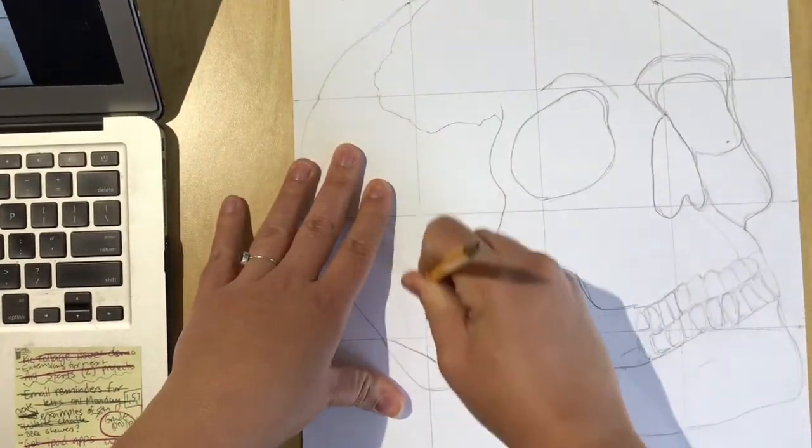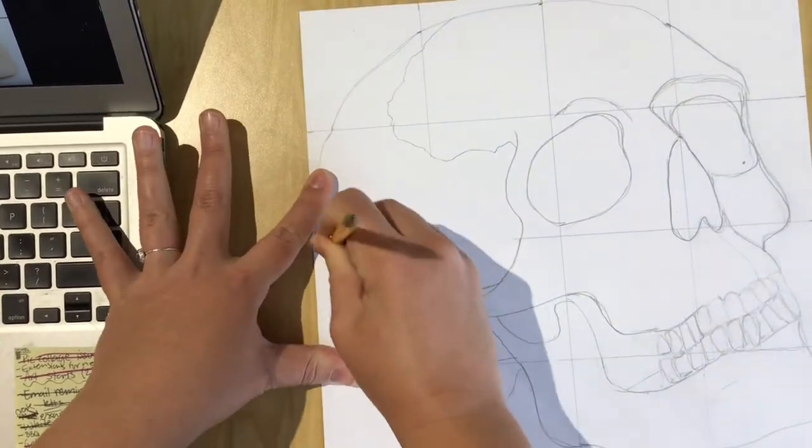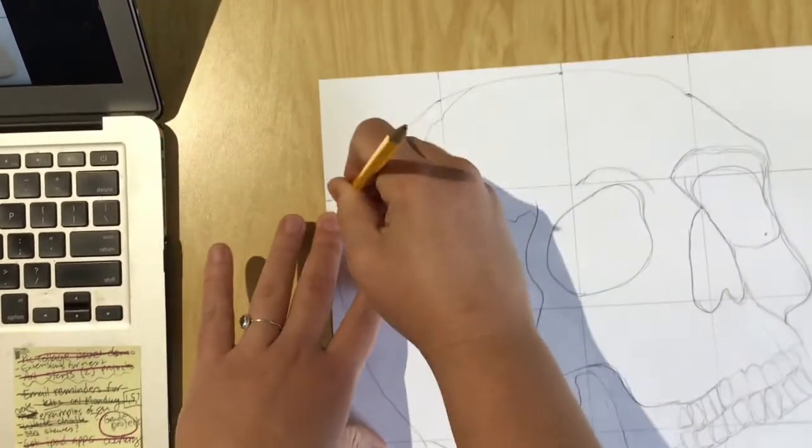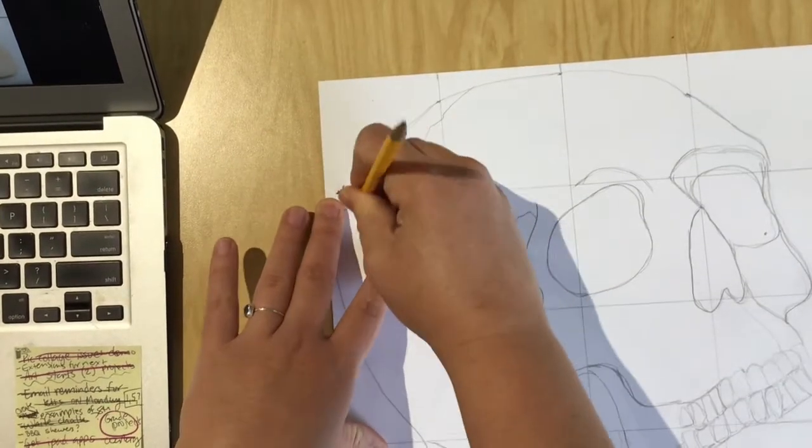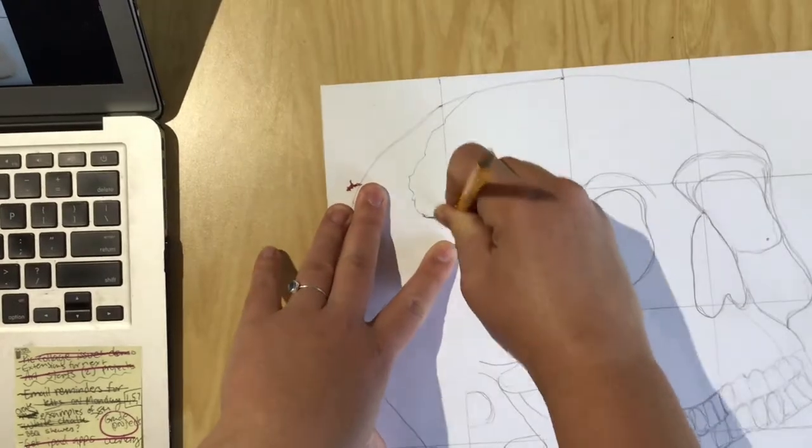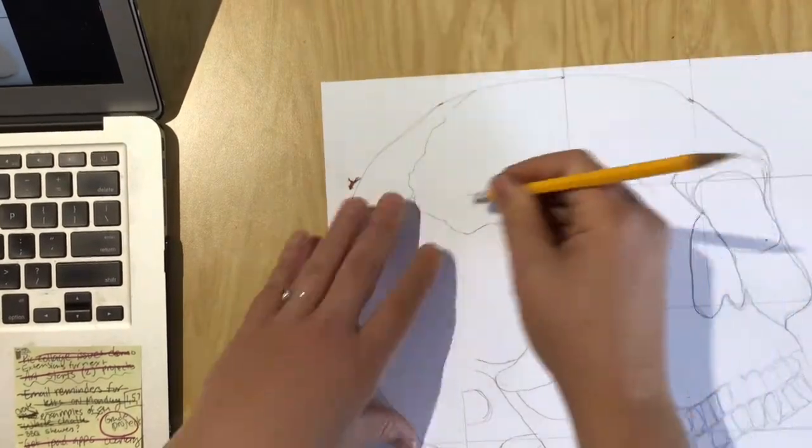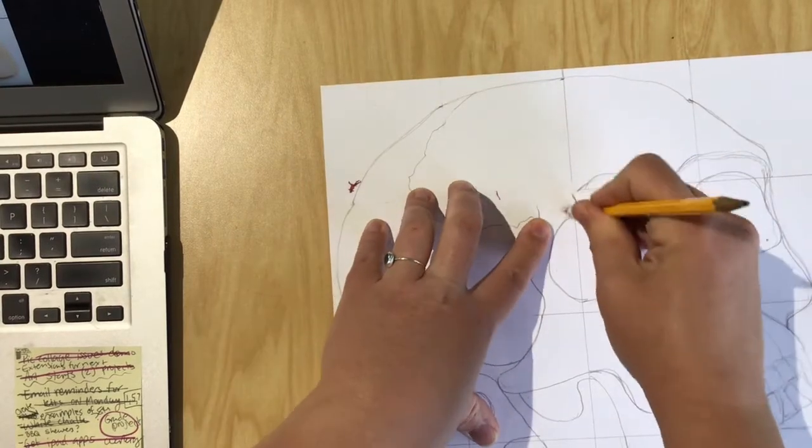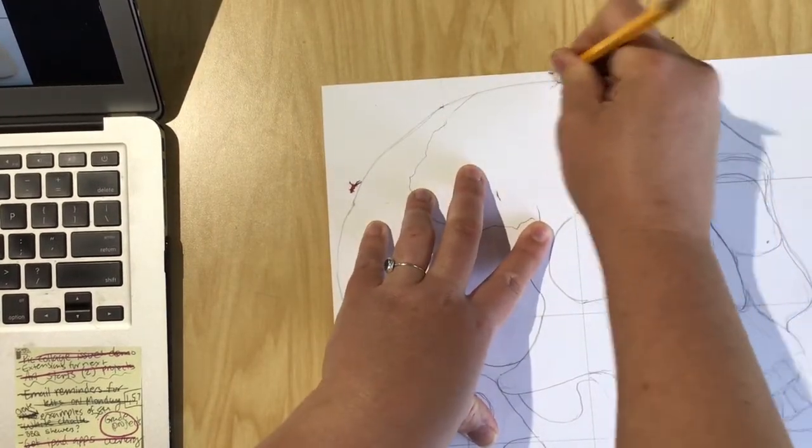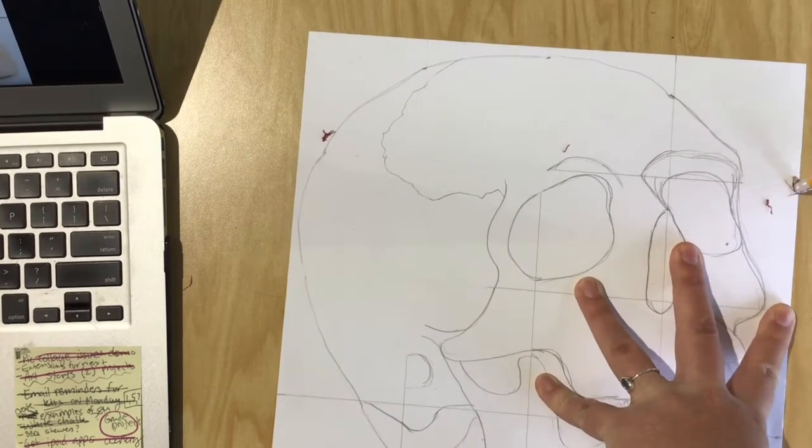So once you have kind of the general concept of the image, then you can work on erasing it. Which is why I told you guys make sure you draw it lightly because you're going to be erasing your grid. So you should have a big eraser that will help with this. But I'm just going to carefully get rid of my grid. You only do this once you have all of the major details on the drawing itself.